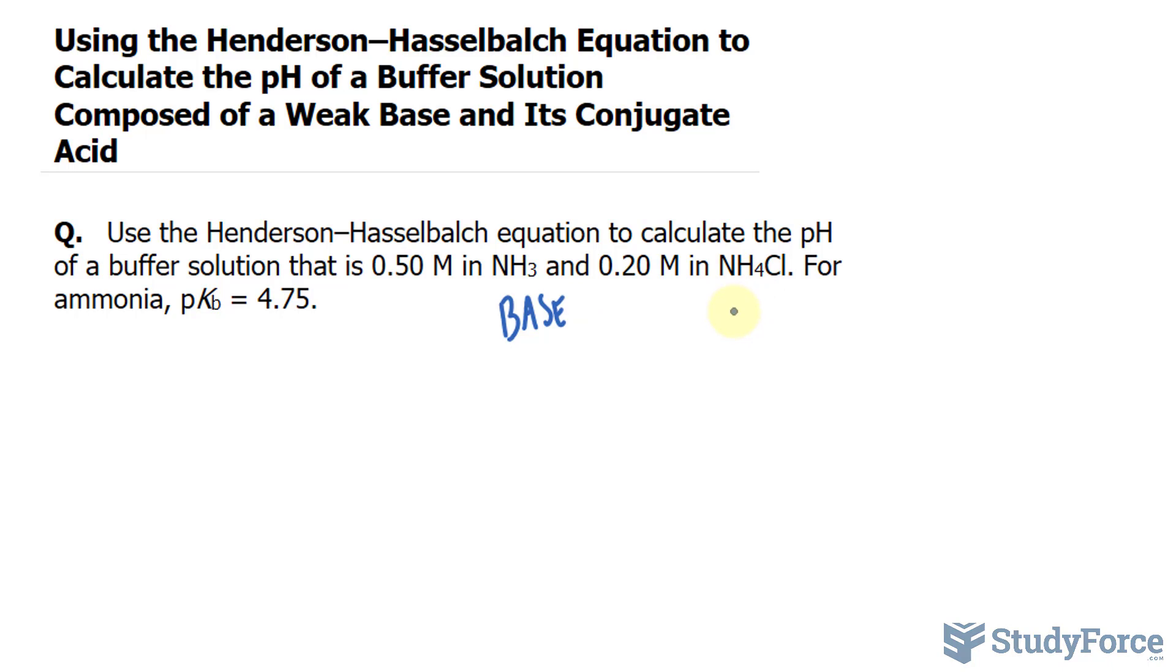This is our conjugate acid. For ammonia, the pKB is equal to 4.75. We'll use that information later.